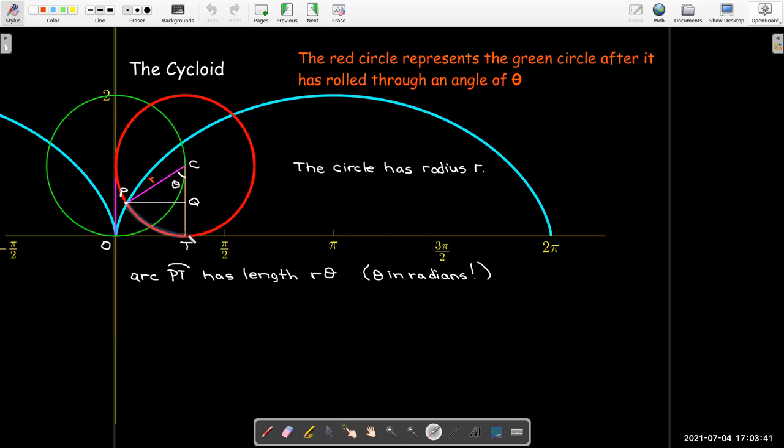So the length of this arc right here from P to T, that is the amount of circumference, the section of the circumference that has been rolled on the x axis. So we started from zero. So the circle is touching at the origin. Now it's touching at T. The length of that arc is just R times theta. Radius times the central angle in radians. And so that tells me that the line segment OT is also R theta. The length of line segment OT is R theta.